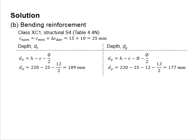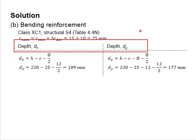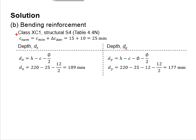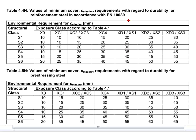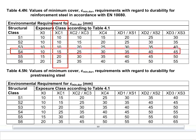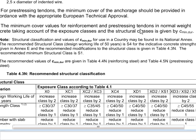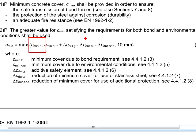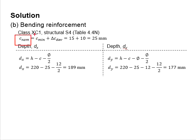Next, design for reinforcement, which requires the effective depth. The effective depth for the shorter and longer spans differ from each other. First, determine the nominal cover — taking exposure class XC1 and referring to Table 4.4N in EC2, the recommended class is S4, so c_min due to durability is 15 mm. Considering all components of c_min, the nominal cover is c_min plus deviation, totaling 25 mm.